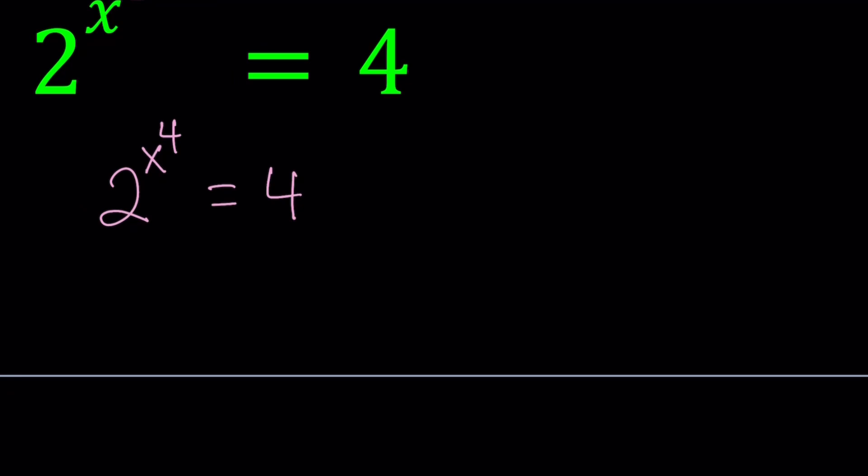So from here, there are two solutions because 4 can be written as 2 squared. And notice that x to the fourth equals 2 from here. x to the fourth equals 2. And two solutions.